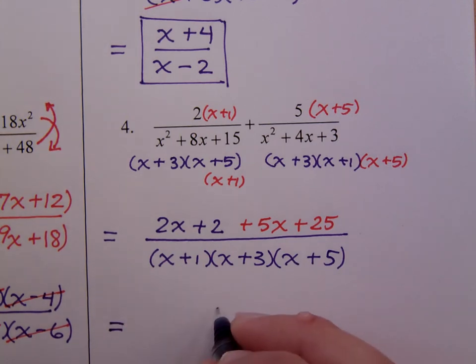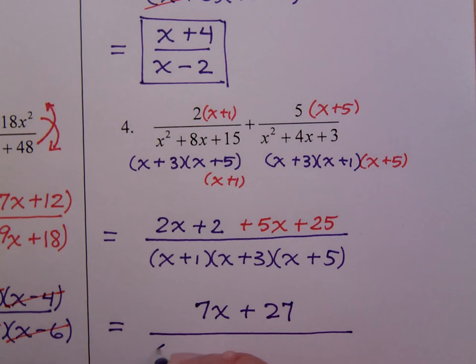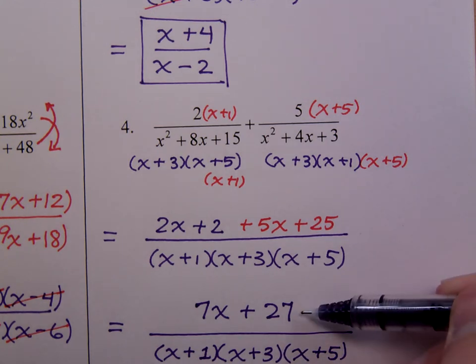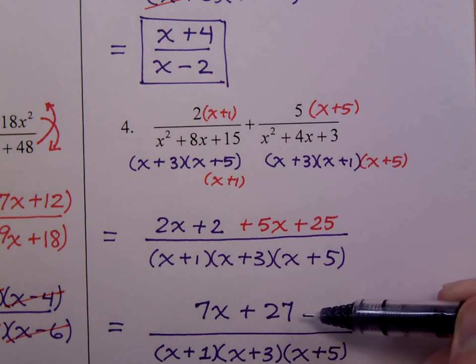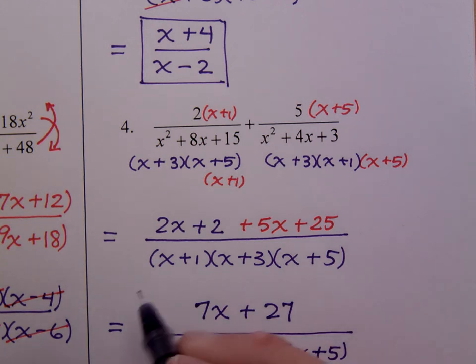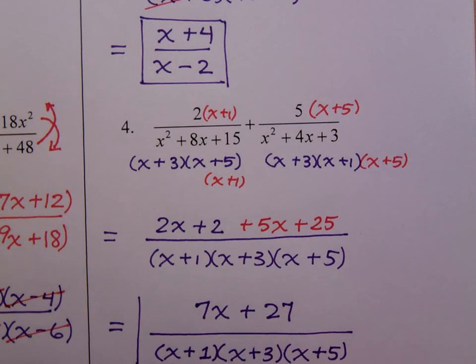We combine those like terms and we end up with 7x plus 27 over that common denominator of x plus 1 times x plus 3 times x plus 5. When you get to this point, you need to see if this guy factors because he may have a common factor with this denominator. Unfortunately, 7x plus 27 is prime. There's nothing else we can do. Just put a box around it and you're done.